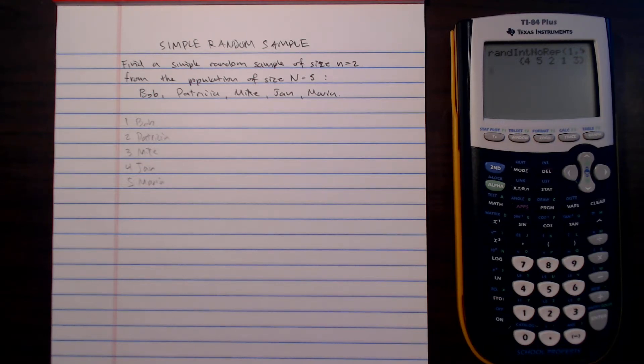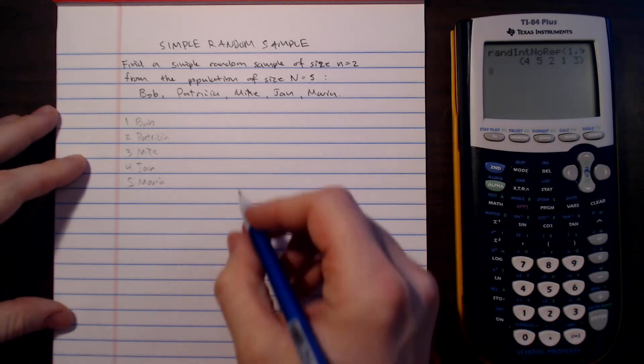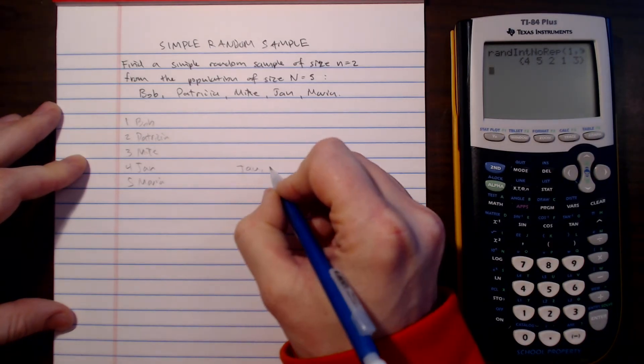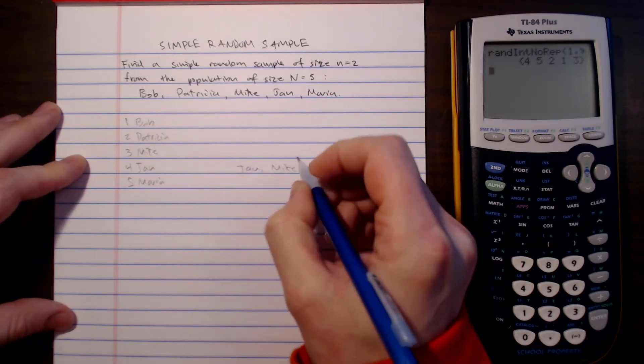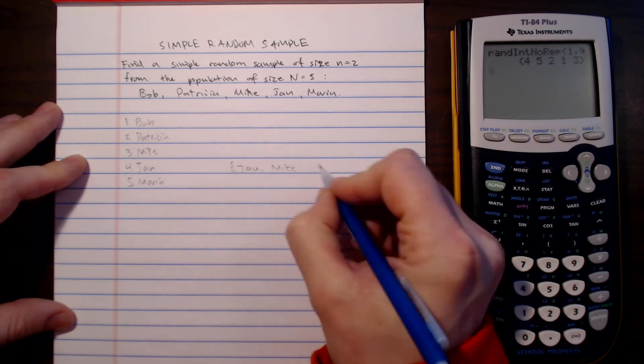Now if we want to choose two of them, all we need to do is take the first two entries, so four and five. So Jan and Mike are our sample.